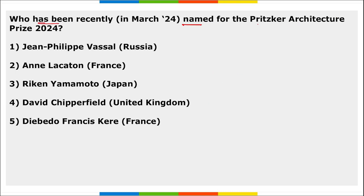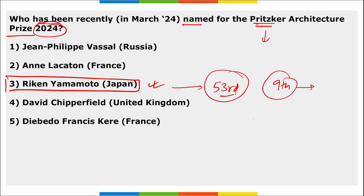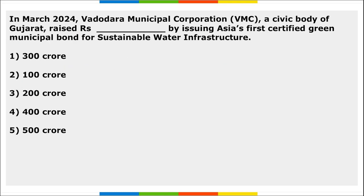Next: who has been recently named for the Pritzker Architecture Prize 2024? Riken Yamamoto of Japan has been named for the Pritzker Architecture Prize — the highest honor given in the field of architecture. Riken Yamamoto became the 53rd laureate to be honored with the Pritzker Architecture Prize and the ninth Japanese architect to win this prize. The prize includes a cash prize of 100,000 US dollars and a bronze medallion.